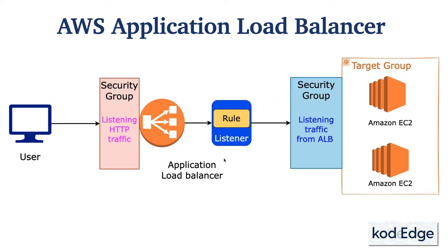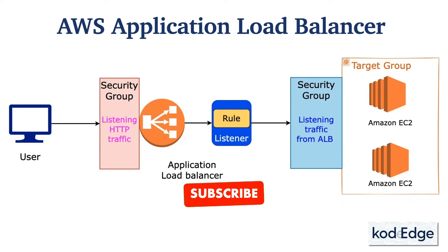We will also set up a security group for our application load balancer to accept HTTP traffic. After that, we will see how to set up rules for our application load balancer to route the traffic to different destinations. The user will first call the application load balancer URL, then the application load balancer will route traffic based on the rules in the listener to a particular target group. We will also install Apache HTTP server on our EC2 instance and deploy a sample HTML page so that we can get a response from the EC2 instance.